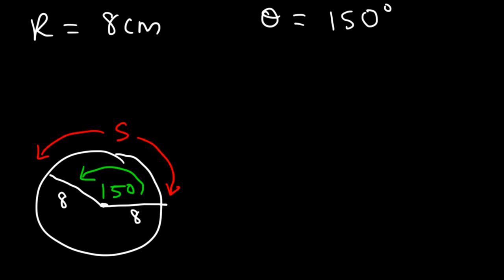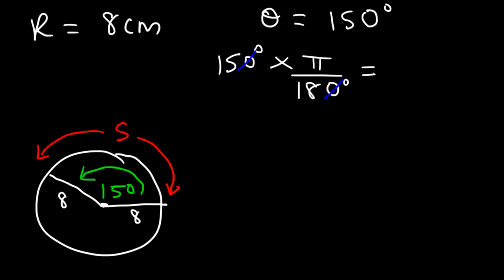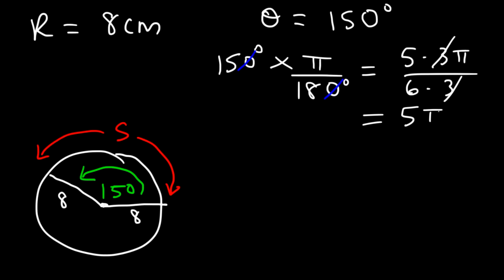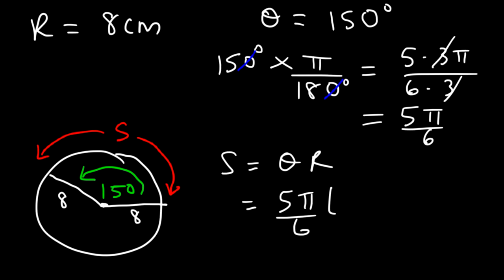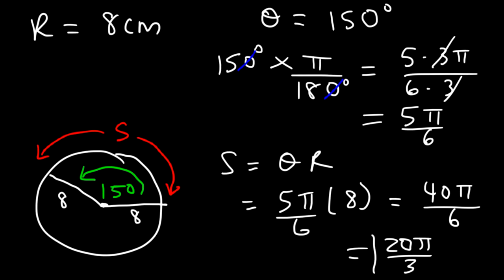We need to convert theta from degrees to radians. Multiply 150 by π/180: cancel a zero to get 15/18, which reduces to 5π/6. Now the arc length is theta times r: (5π/6) times 8 centimeters per radian gives 40π/6, which reduces to 20π/3. That is the arc length.